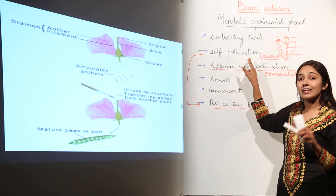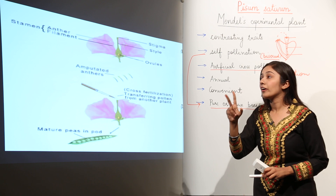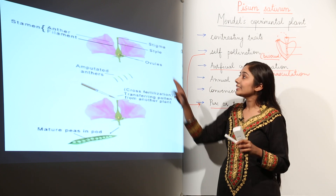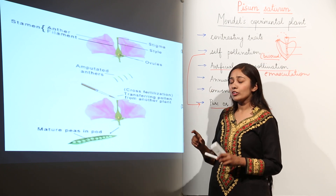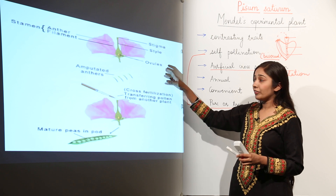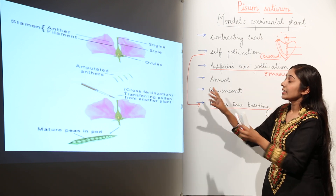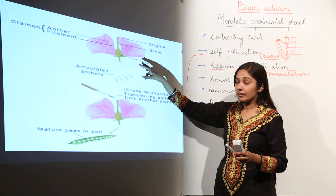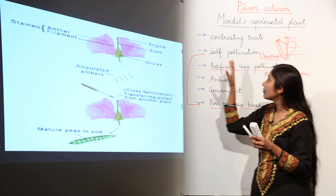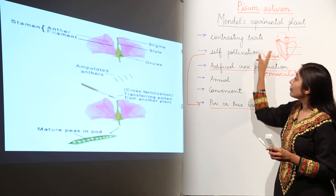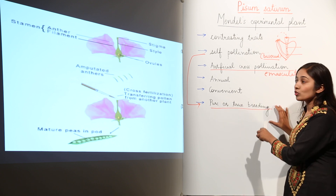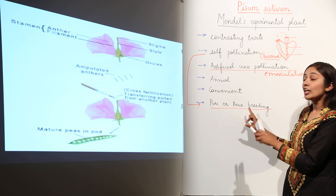Secondly, the plant was able to self-pollinate because the flowers are bisexual — they have both male and female organs. The male reproductive organ is the stamen, composed of anther and filament. The female part includes stigma, style, and ovary. Since it is self-pollinating, the pollen grains from the anther fall on the stigma of the same flower, leading to fertilization. Due to this self-pollination, the plant produces pure or true breeding varieties.